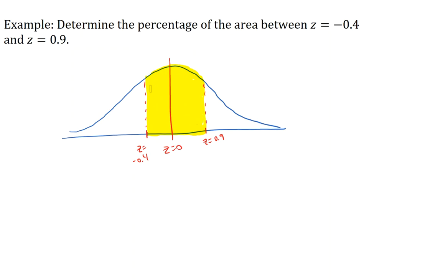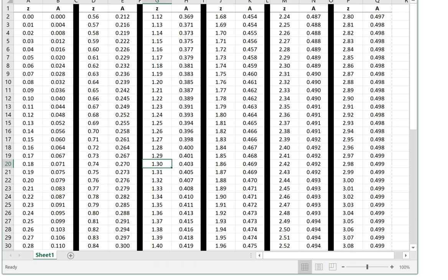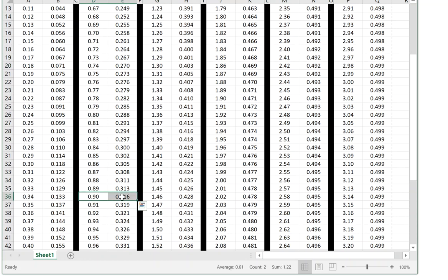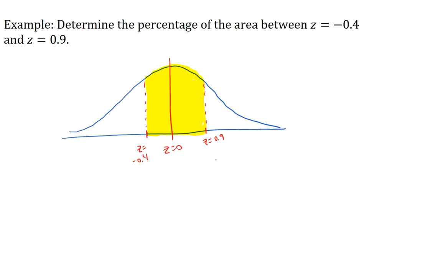So I'm certainly going to look up both of the a values for these z-scores. So let's look up the area for 0.9, a z-value of 0.9. So I go to my z column and I locate 0.9. I'm going to have to scroll here. For 0.9, a is 0.316.